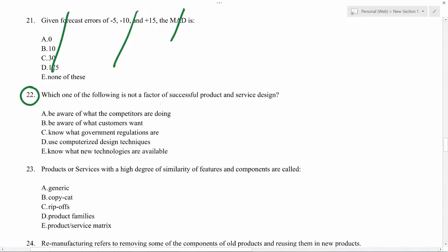22. Which of the following is not a factor of successful product and service design? You need to be aware of what competitors are doing. You need to know about the customers. You need to know about what are the government regulations. In fact, you don't need to use computerized design techniques. You can use so many other techniques. And this is also needed. So D is the correct answer.